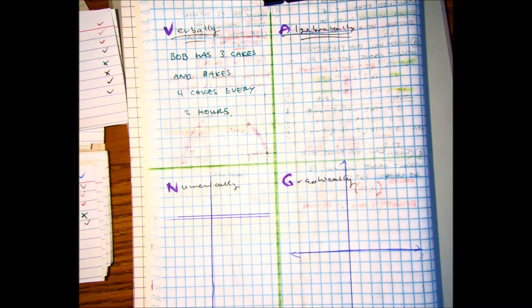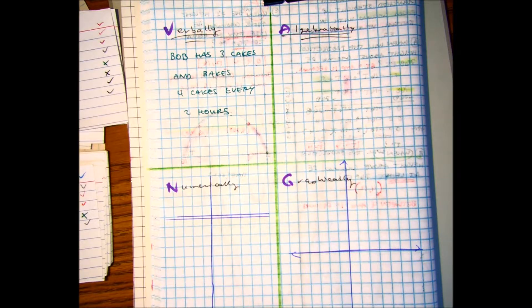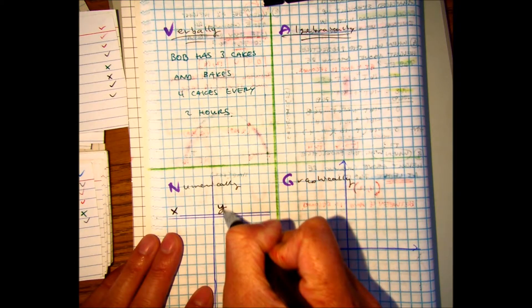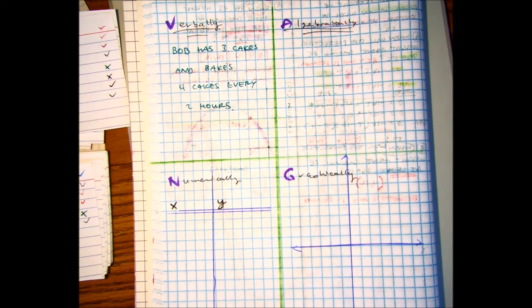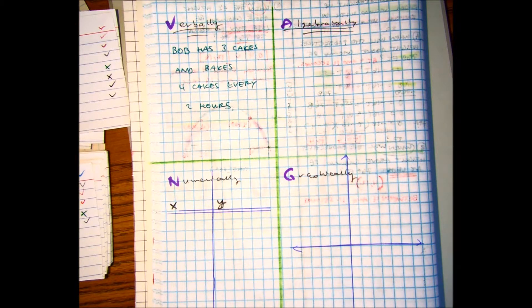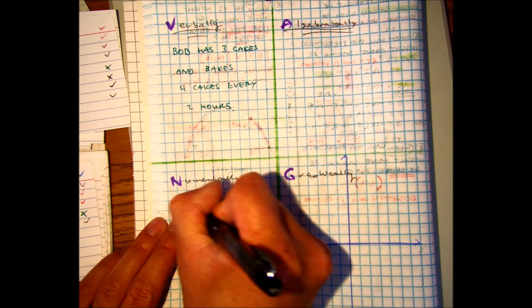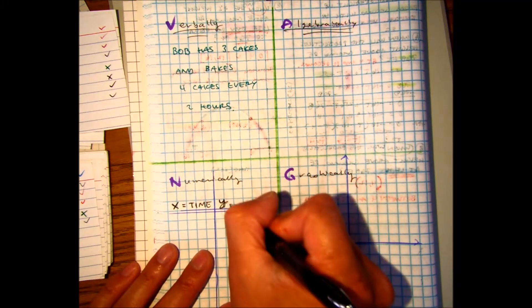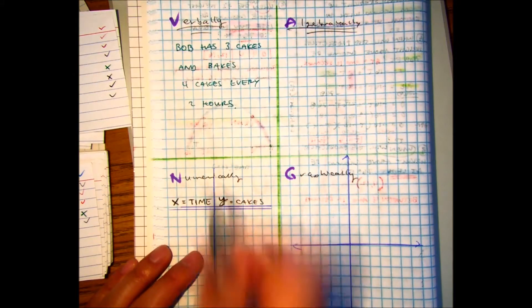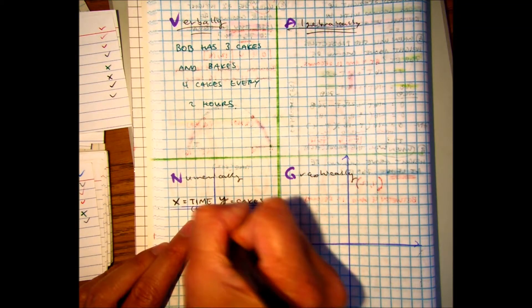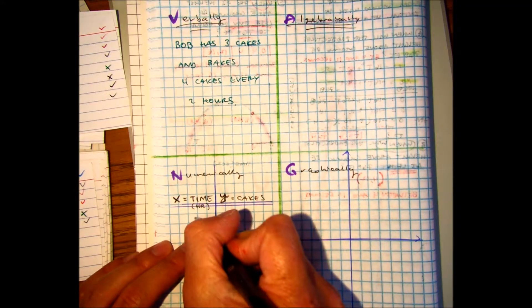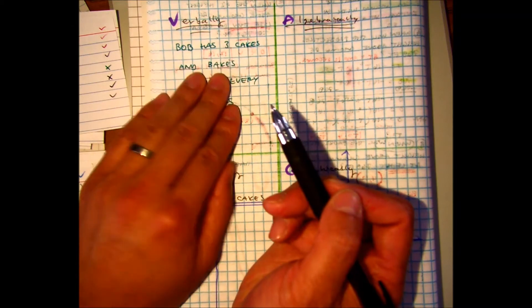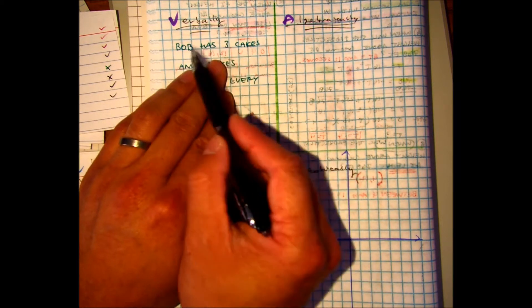Bob has three cakes and bakes four cakes every two hours. Well, if I make a table of values which has an x and a y, what do you think x is going to represent? X is going to represent time. And what do you think y represents? Cakes. Class, if zero time goes by, how many cakes does Bob have? Well, he doesn't have any time to bake any cakes, so he has three.